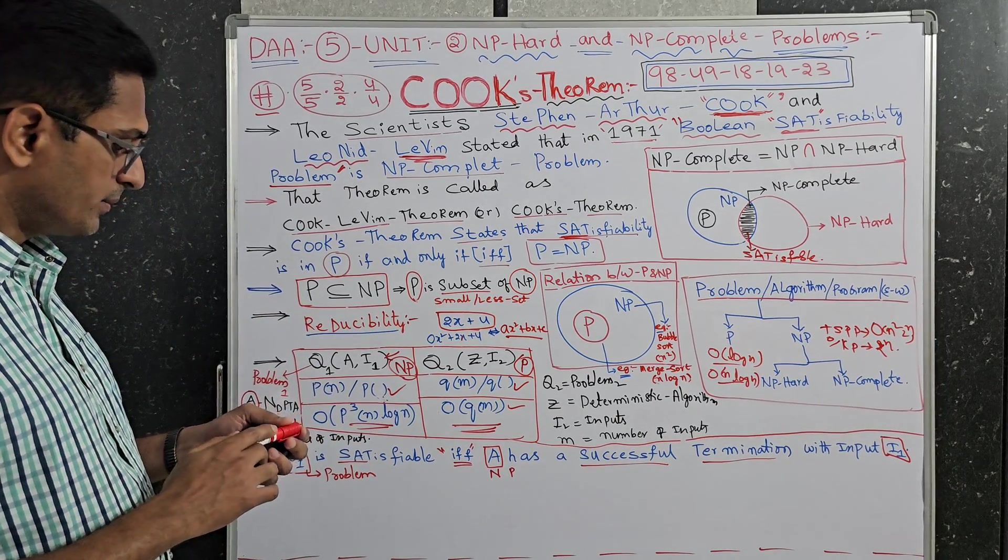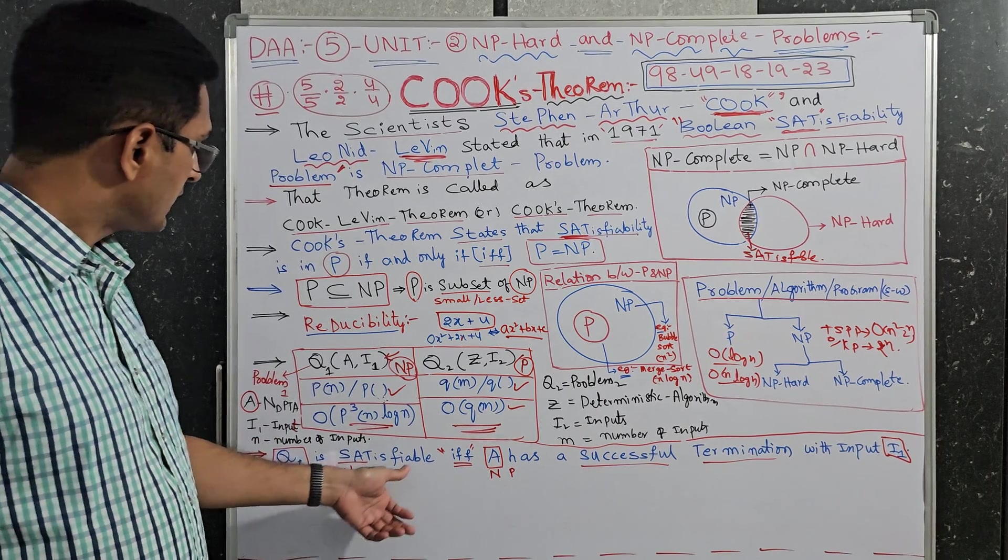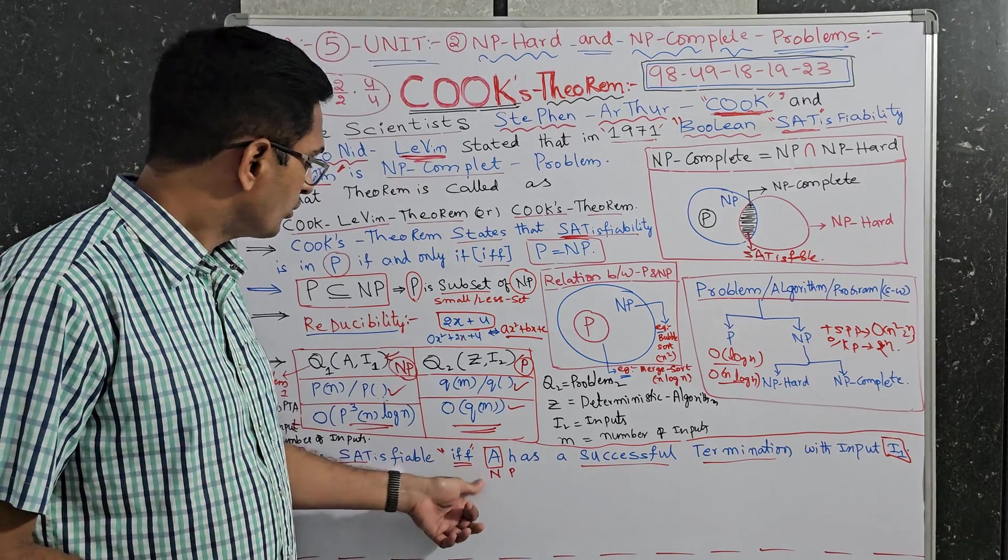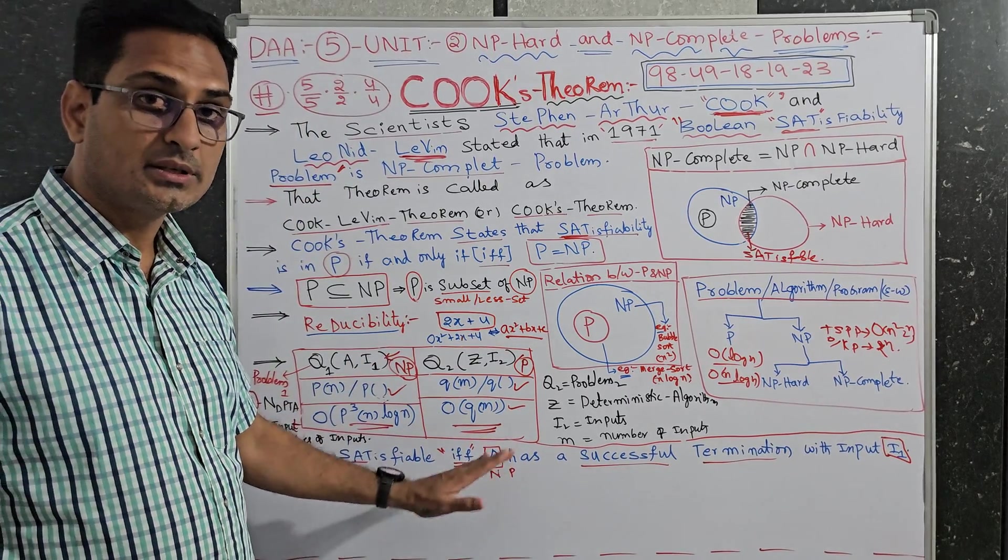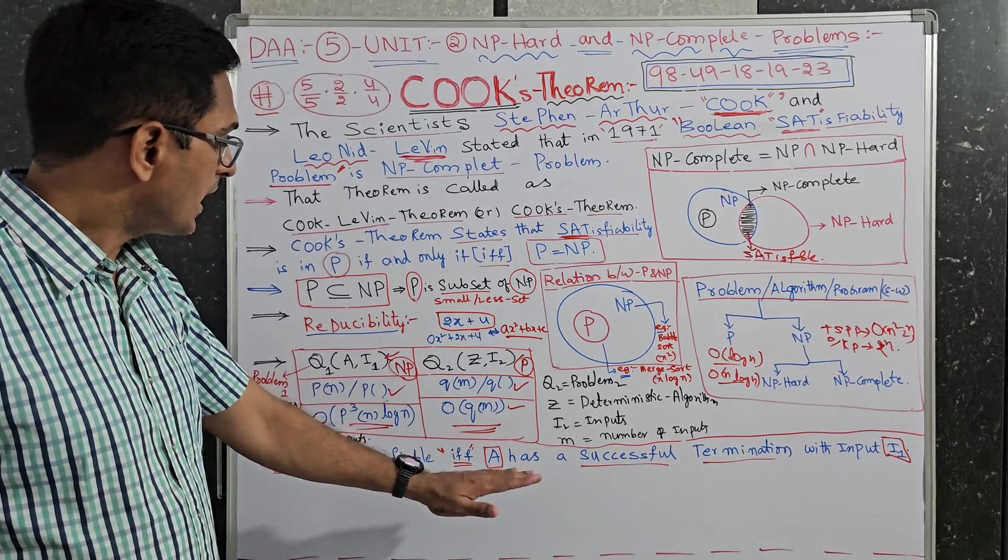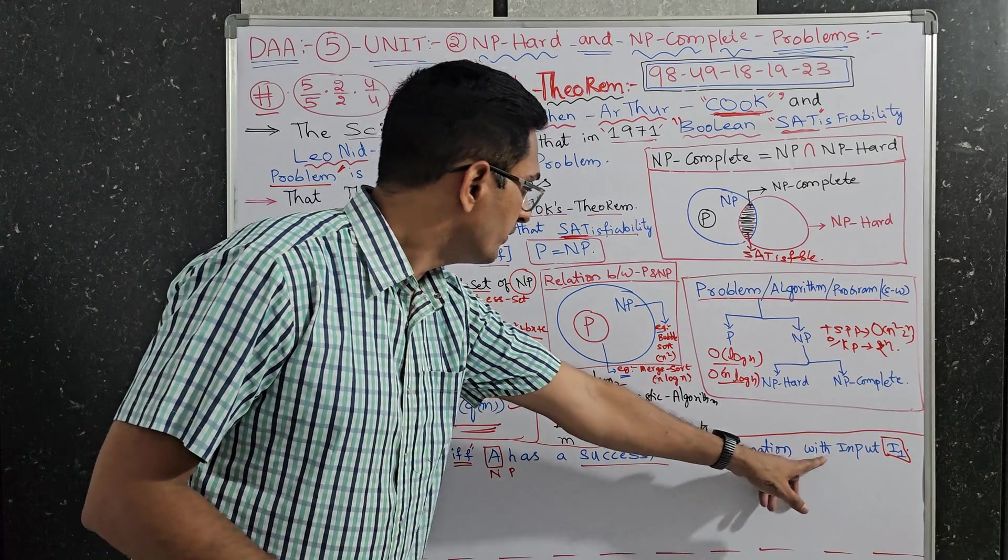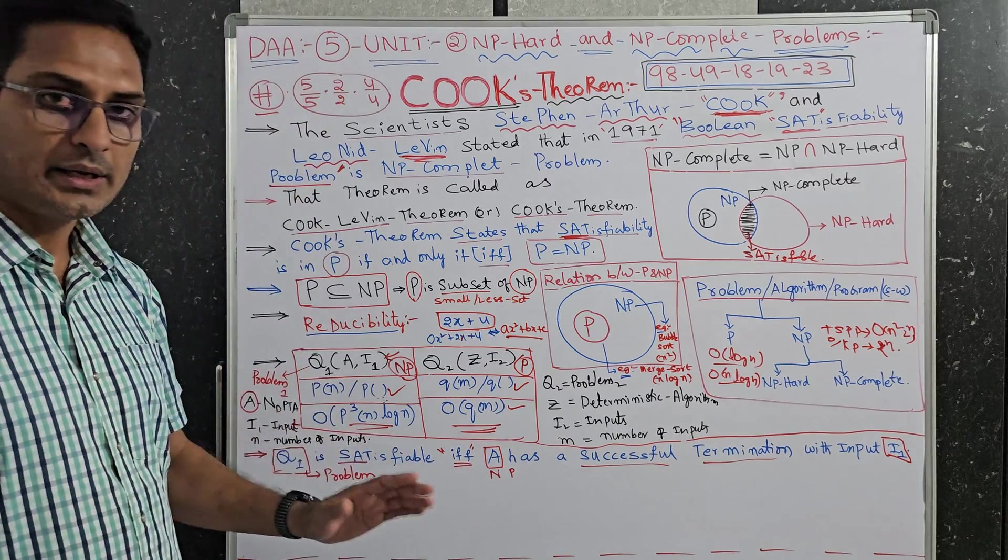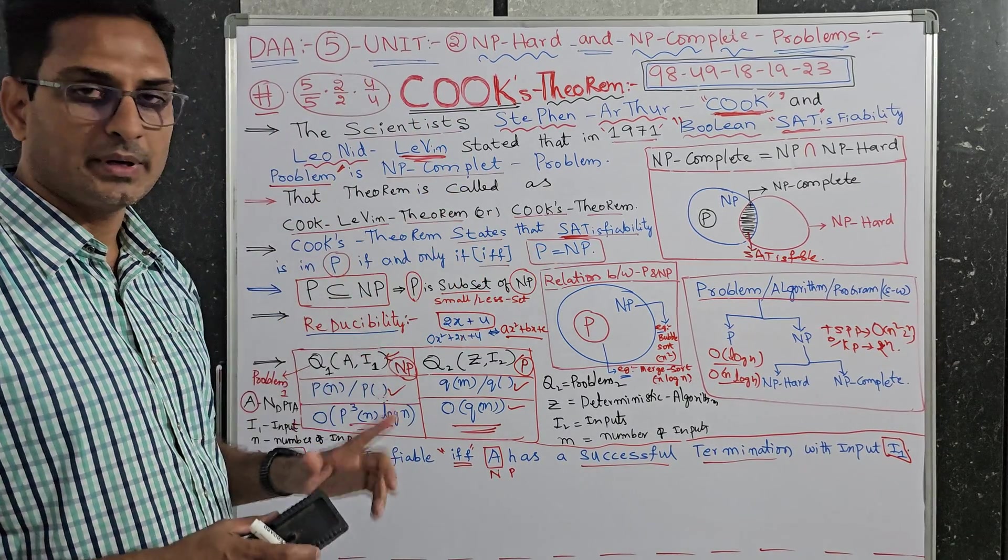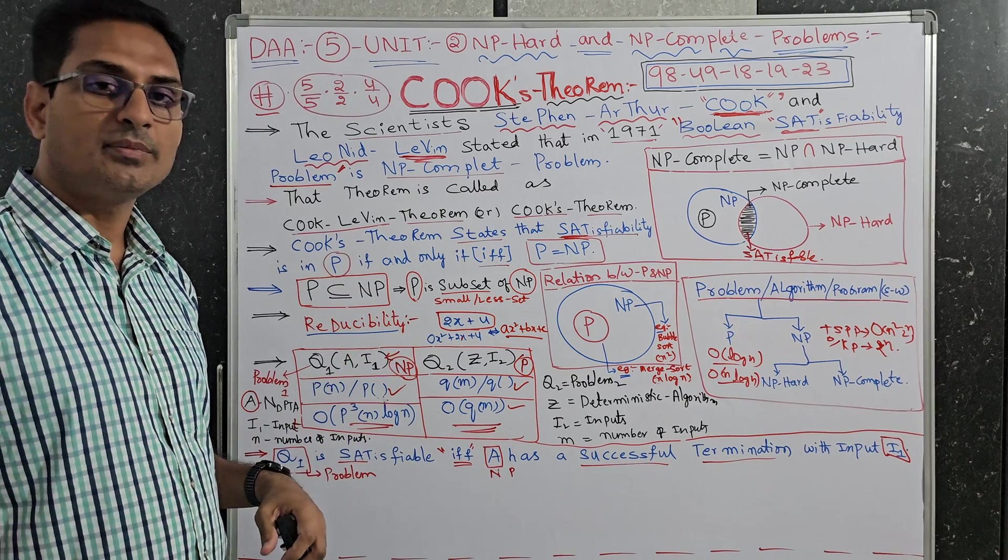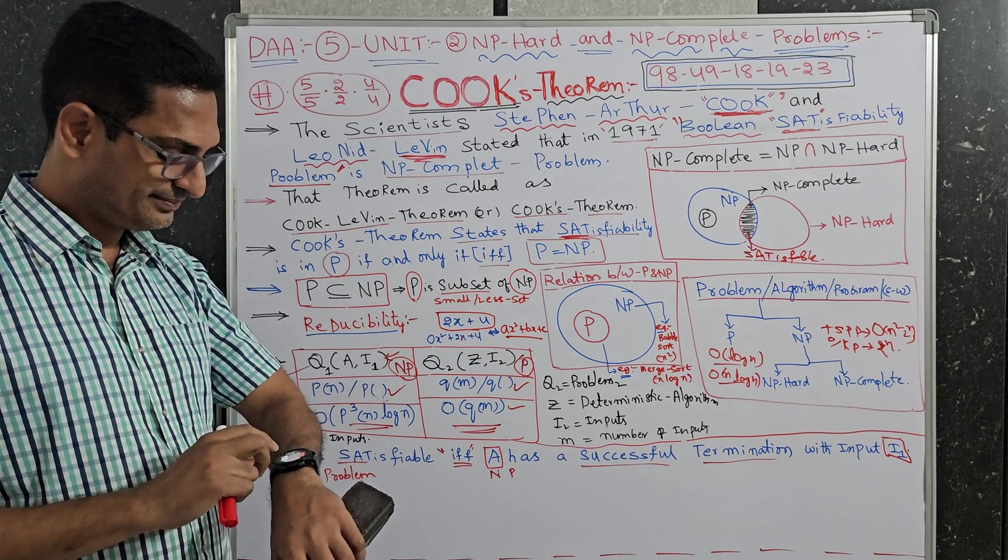But here, see the bottom, bottom line. Q1 means the problem is satisfiable if and only if A means algorithm here, non-deterministic polynomial algorithm, has successfully terminated, successfully terminated with inputs, with a certain number of inputs. Then this is called Cook's theorem, P equal to NP. Write neatly in the exam.